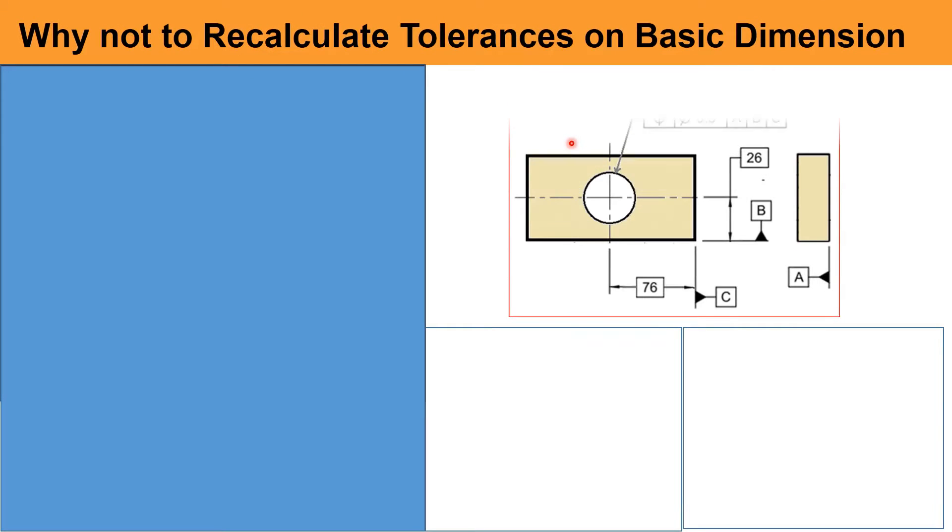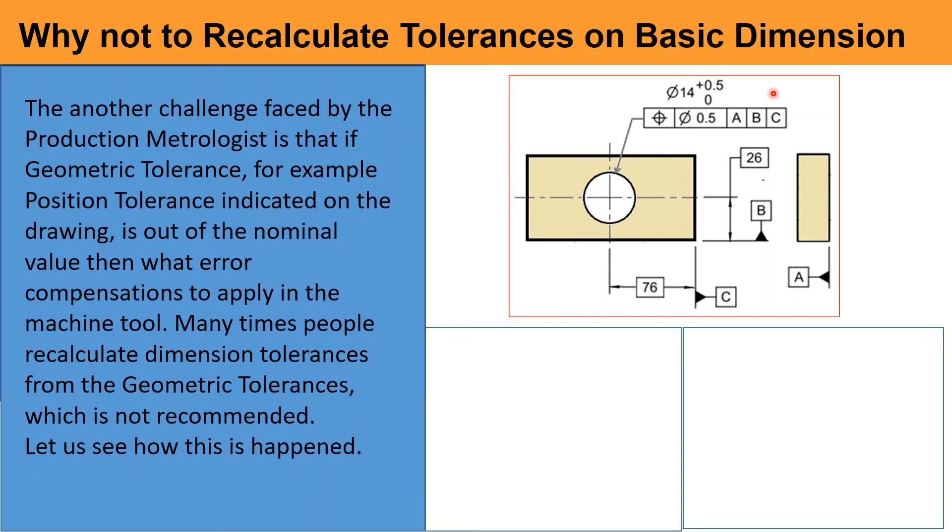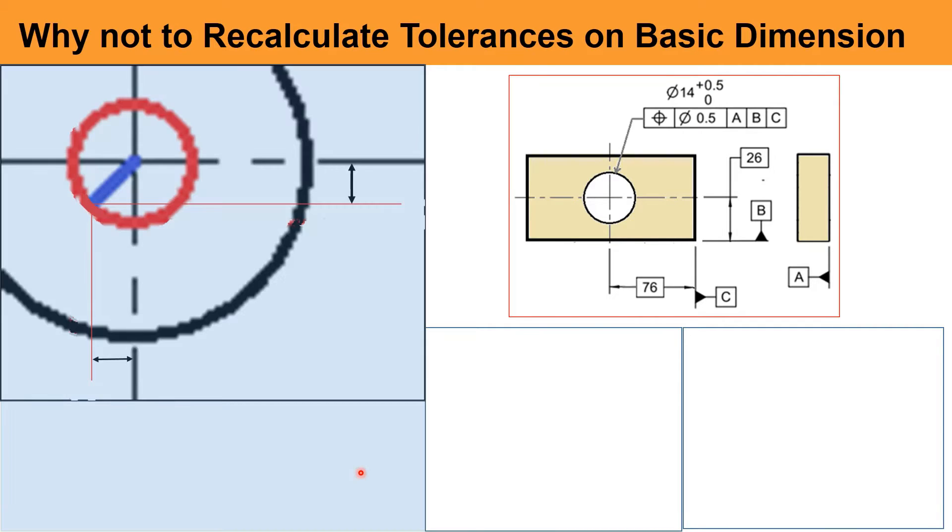The another challenge faced by production metallurgists is that, if the geometric tolerance, for example, position tolerance indicated on the drawing, is out of the nominal value, then what error compensation to apply in the machine tool? Many times, people recalculate dimension tolerances from the geometric tolerances. Normally, this process is called reverse engineered process. This process is not recommended. Let us see how this is happened.